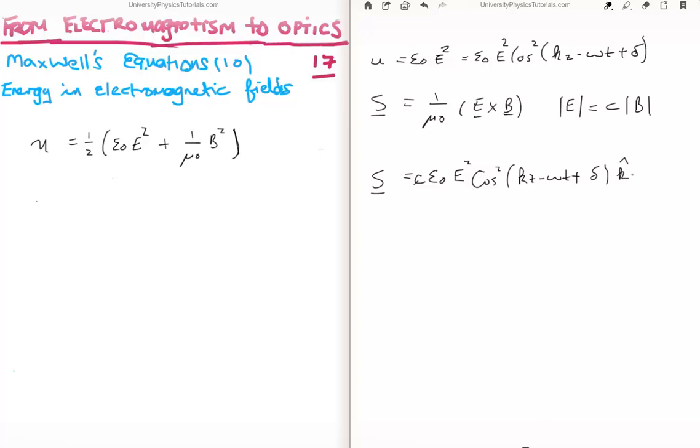And it's moving in the k hat direction. Okay, so we can say that it's U times C. That's the magnitude of the Poynting vector, is U times C.